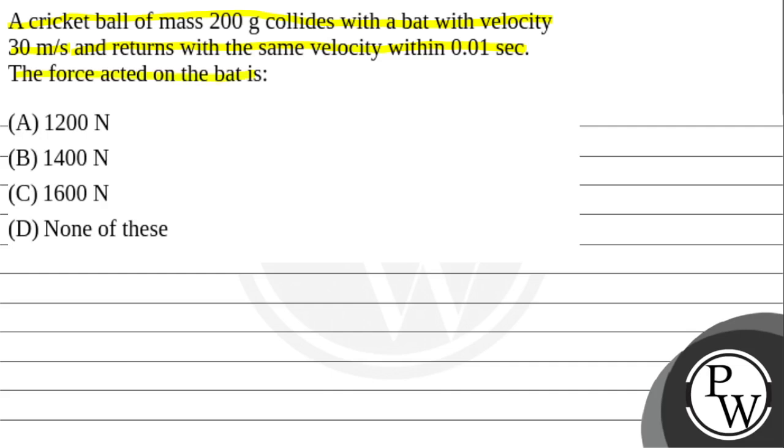The force acted on the bat is option A 1200 newtons, option B 1400 newtons, option C 1600 newton, option D none of these.